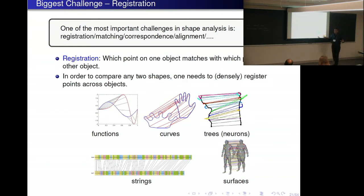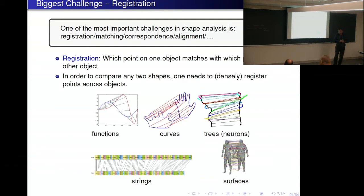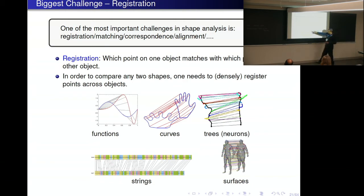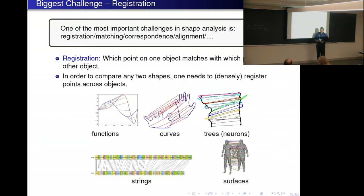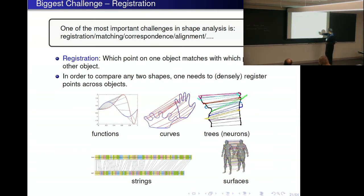If I'm trying to compare two objects, to quantify the differences between them or to deform one into another, I need to know which point on this object corresponds to which point on the other object. If I have two simple functions and I want to compare them, matching them vertically would be a bad registration. I want the peak to match with peak and the valley to match with valley — then the comparison is more fair and appropriate. But how to match these things? What is the registration? One can do this for curves, surfaces, and strings.